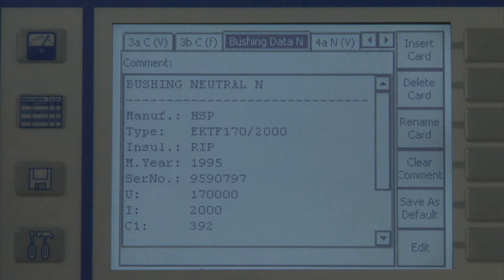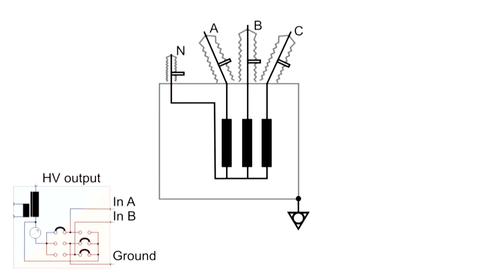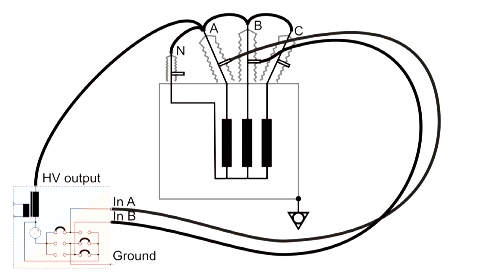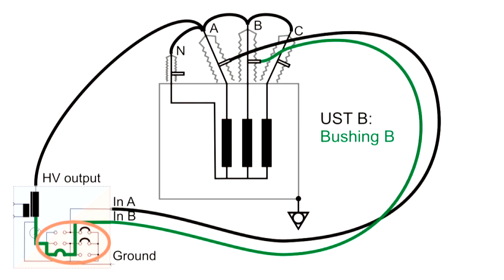To measure the four bushings of our transformer, we start with bushings A and B and connect the test leads accordingly. In the first test card, USTA is set. This setting allows measuring bushing A. Without rewiring, we can continue with measuring bushing B, because the next test card now switches to USTB mode.